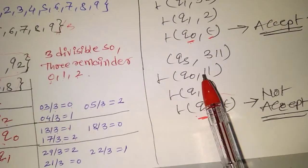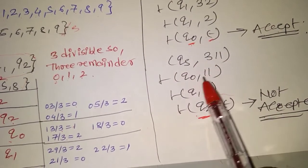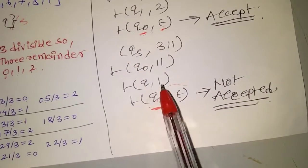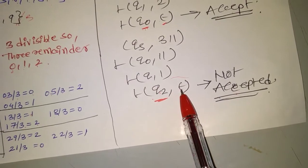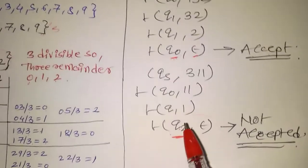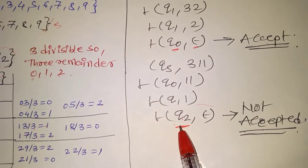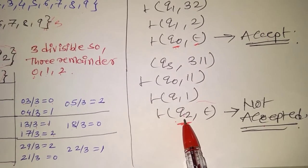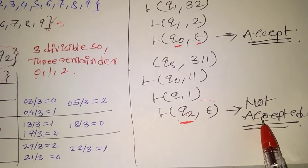Next is a not-accepted number: 311. Qs on input 3 goes to Q0. Q0 on input 1 goes to Q1. Q1 on input 1 goes to Q2. The blank means epsilon. Q2 is a non-final state, so 311 is not accepted — it is not divisible by 3. This is the FSM.